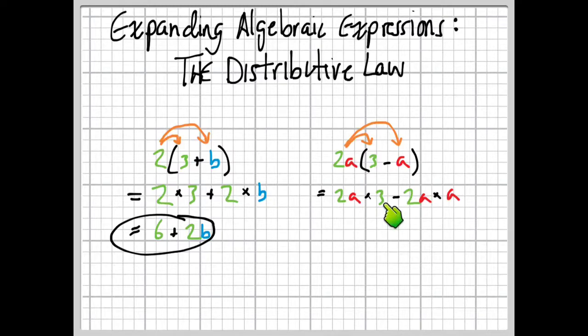2a times 3, we just take the 2 times the 3, and we get 6, so 6a, and then minus 2a times a. And here we have a times a, so we just make that into a squared, so 2a squared. Now, these have different pronumeral factors, different variable factors, so they're unlike terms, so we can't simplify and we can't combine them. They just stay the way they are. That's the answer.